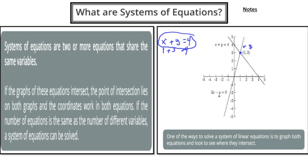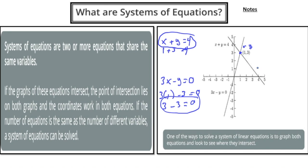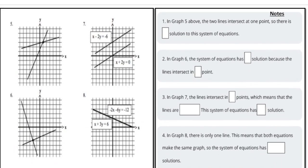Now let's check if (1, 3) also satisfies the second equation: 3x minus y equals zero. Plugging in x equals one and y equals three: three times one minus three equals zero. Three minus three is zero — it checks out! So we know that the solution to this system is (1, 3).